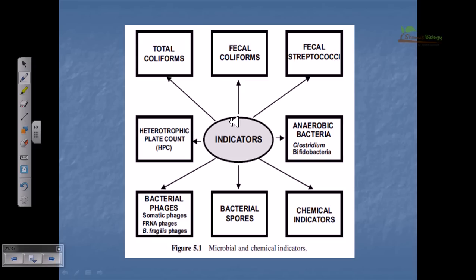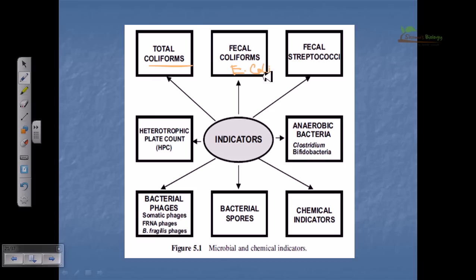The indicators can be total coliforms — a type of bacteria consisting of E. coli, Enterobacter, and related organisms — and especially fecal coliforms, which are directly linked to the feces of animals like humans and warm-blooded animals; E. coli is the primary example. Third are fecal streptococci, also related to feces but belonging to the Streptococcus genus. These are all biological indicators. Bacterial phages can also be studied, because the presence of phages indicates the presence of bacteria since phages depend on bacterial cells for survival.